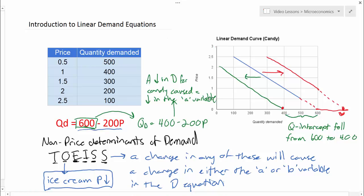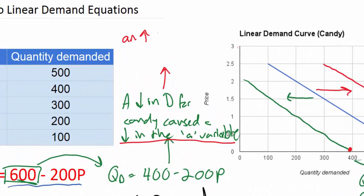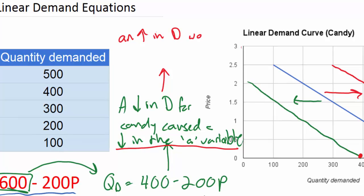A decrease in demand would cause the A variable to decrease. We can say an increase in demand would cause the A variable to increase.